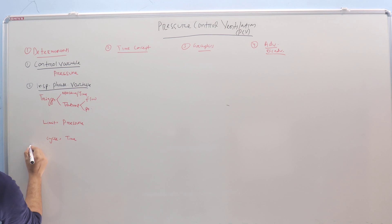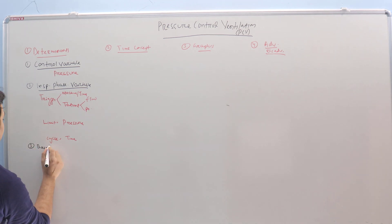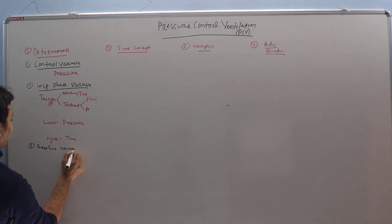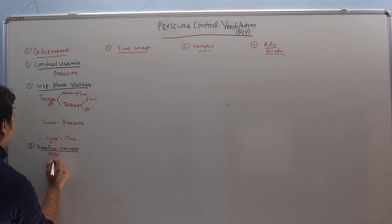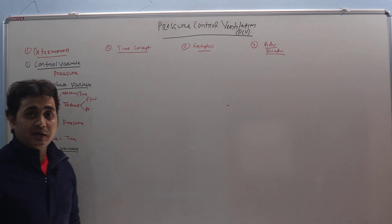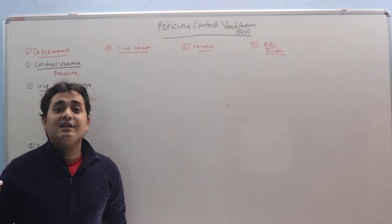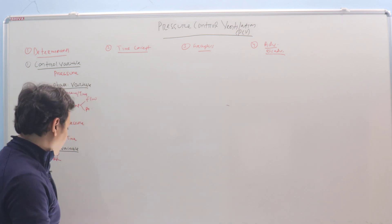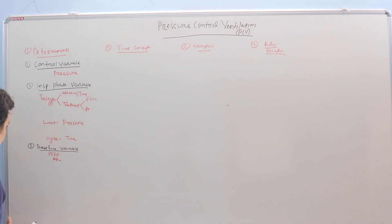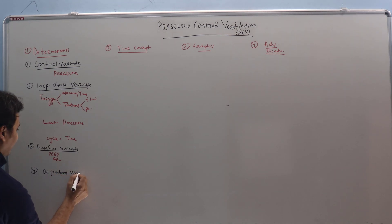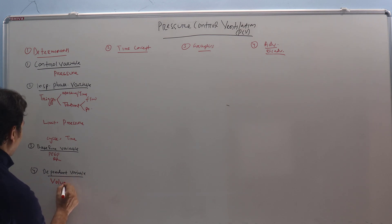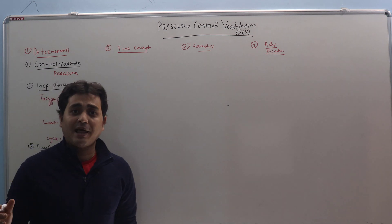The third is called the Baseline Variable — that will be PEEP and respiratory rate. Respiratory rate has to be set depending upon how much minute ventilation you want to target, although it is not certain. The fourth will be the Dependent Variable, and that will be volume. We are not setting the volume, so volume will change according to the resistance and compliance of the respiratory system.